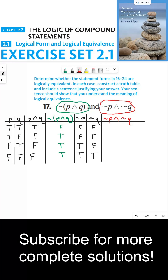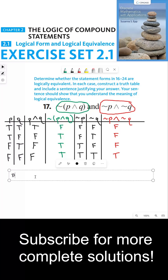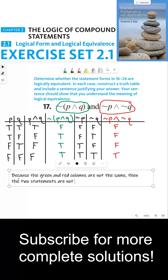¬P∧¬Q is only true when both ¬P and ¬Q are true. In the first row, ¬P is false and ¬Q is false, so ¬P∧¬Q is false. The last row would be true. Now we can answer the question: we have our two columns and just have to compare whether the columns are the same. If they are the same, they are logically equivalent. In this case they're not, so these two statements are not logically equivalent. We can say: because the green and red columns are not the same, the two statements are not logically equivalent.